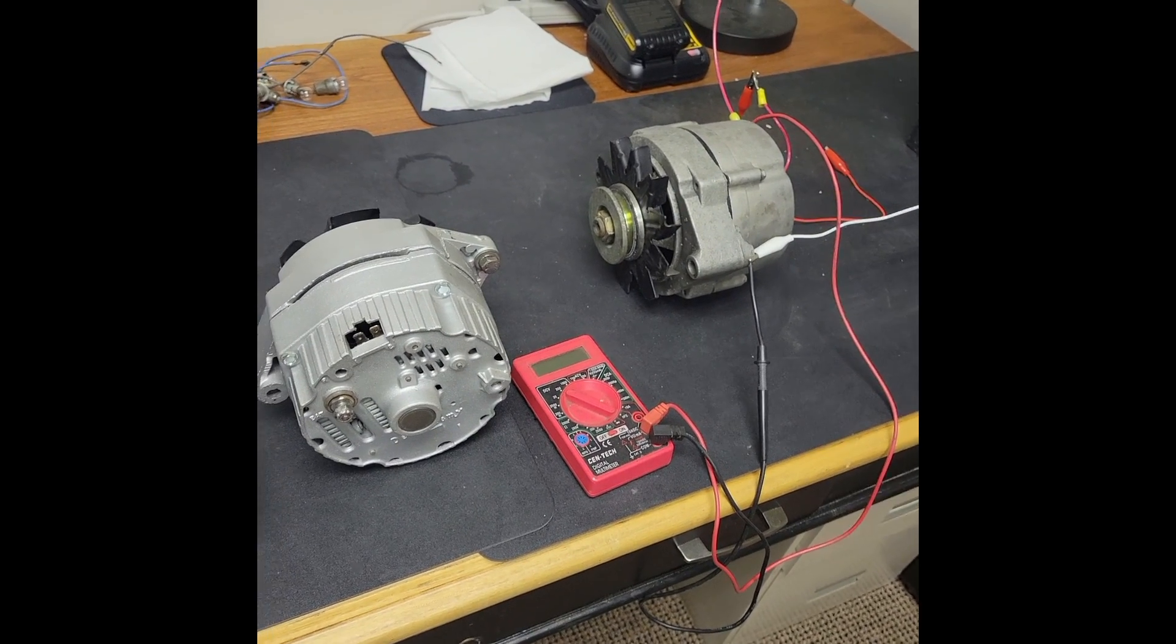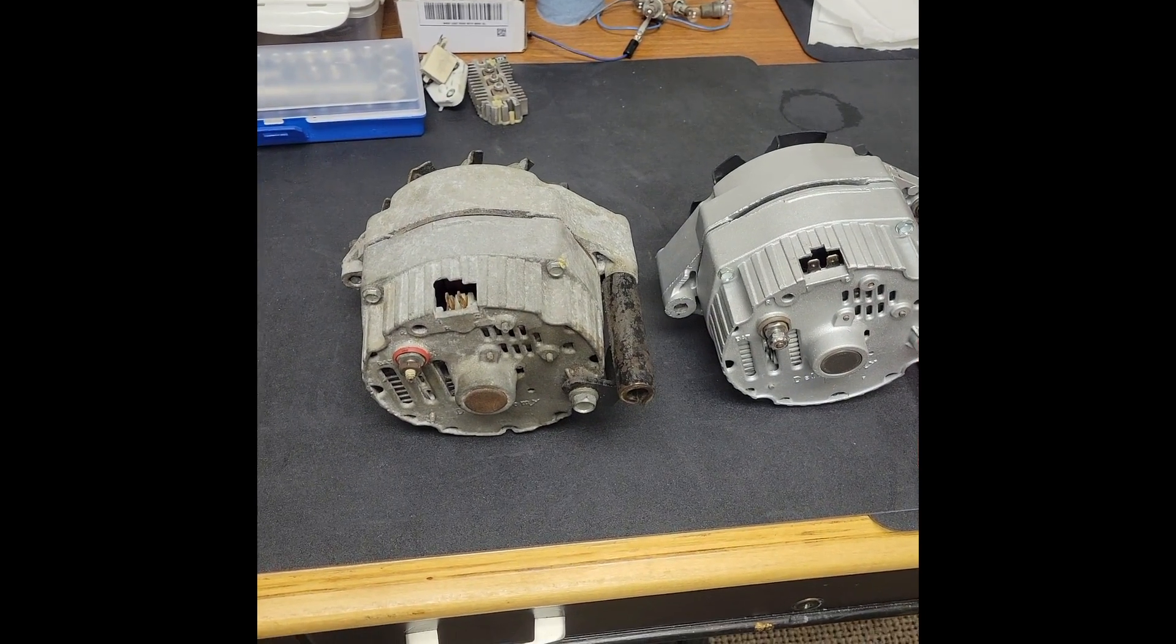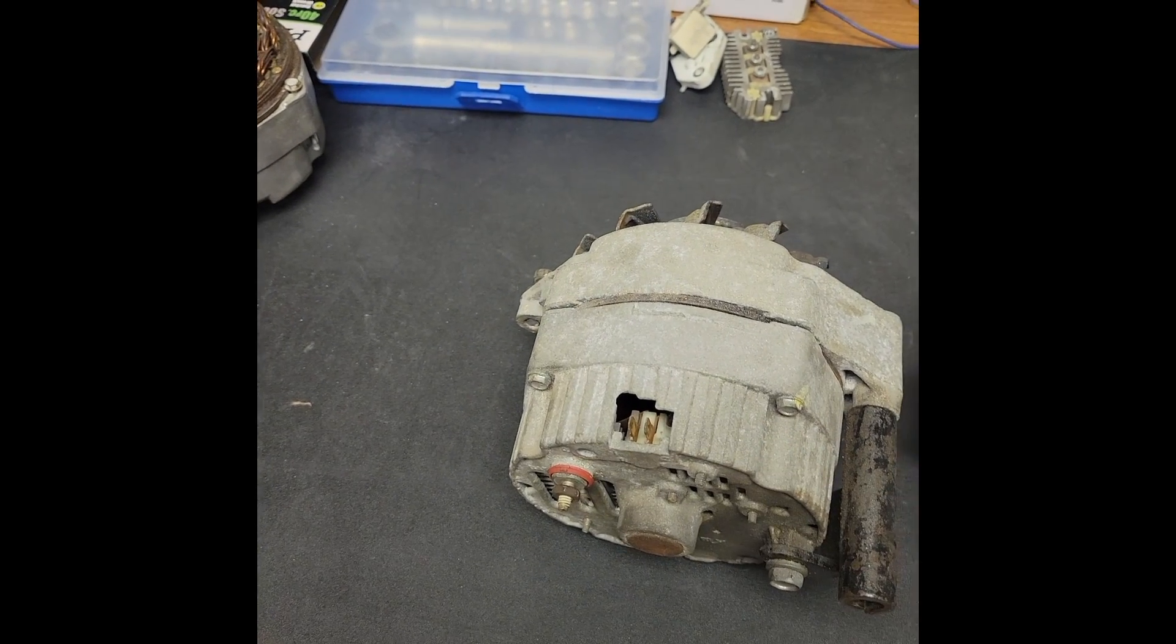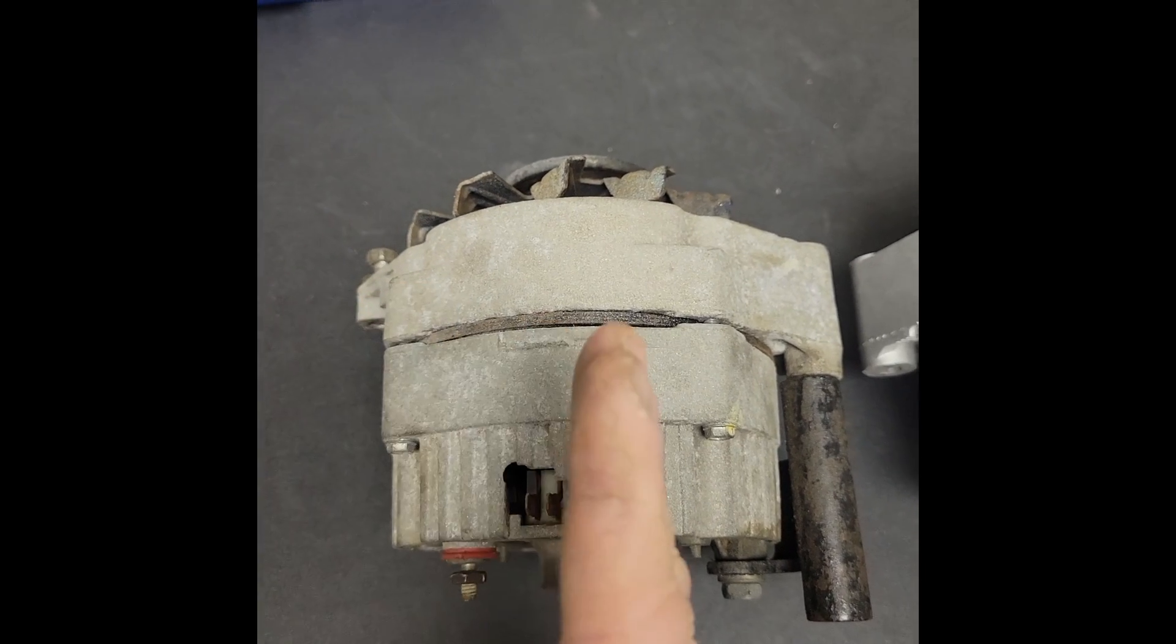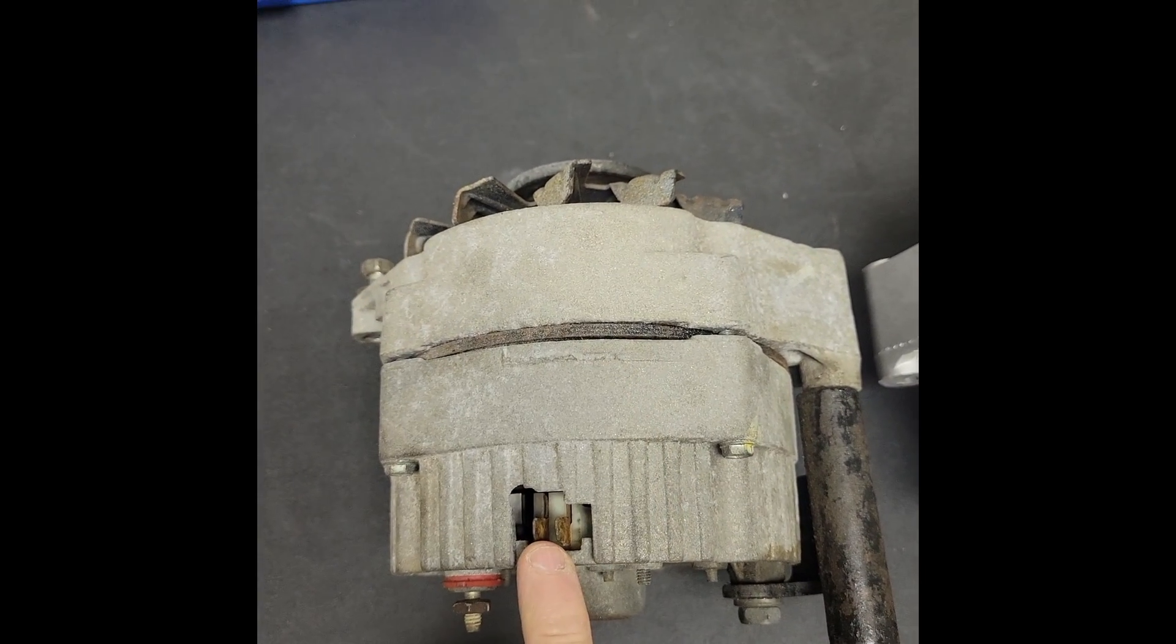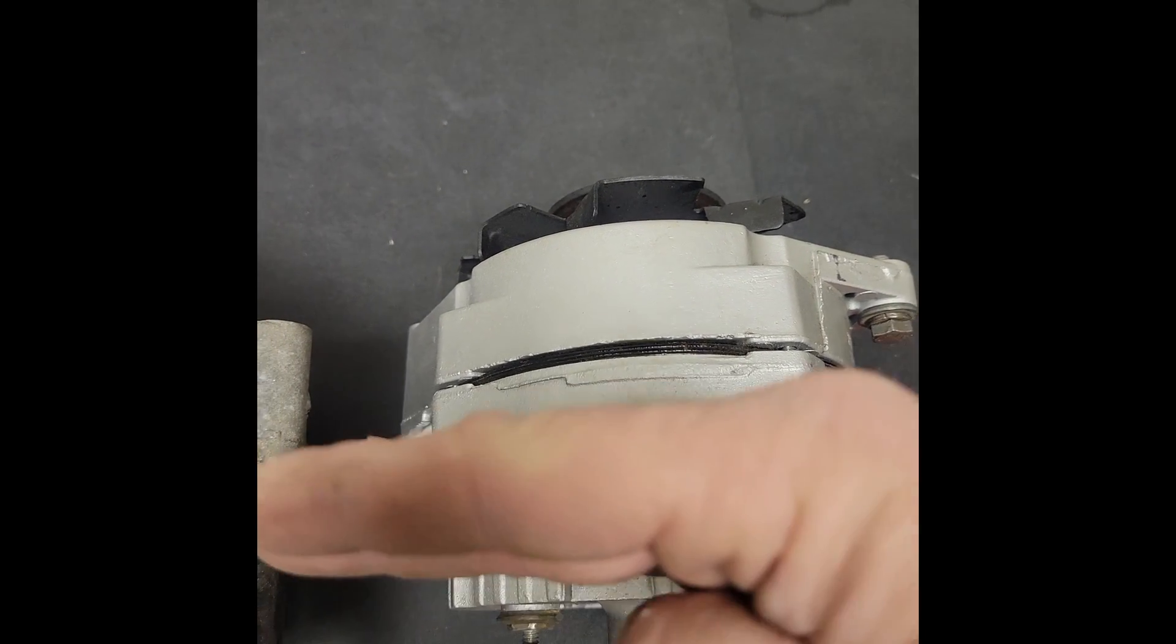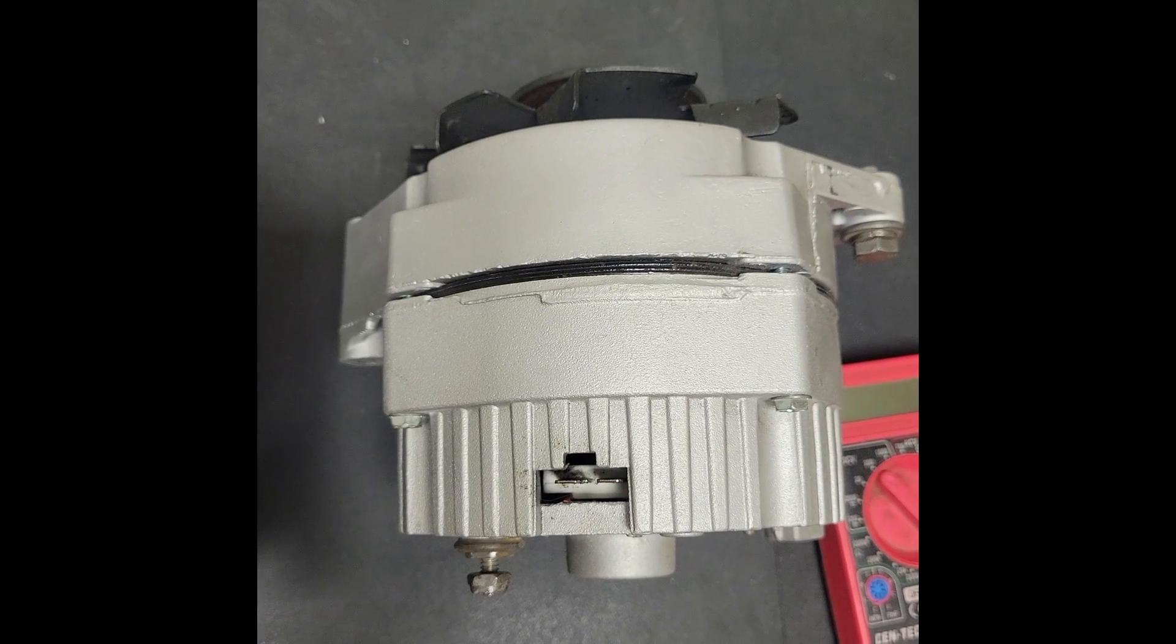Let's start off by first identifying the difference between an internally regulated and an externally regulated. On the left here we have an externally regulated alternator. Easiest way to determine that is from the pins. These pins go in the same direction as the alternator itself, as opposed to an internally regulated which have the pins going horizontally or across the width of the alternator.